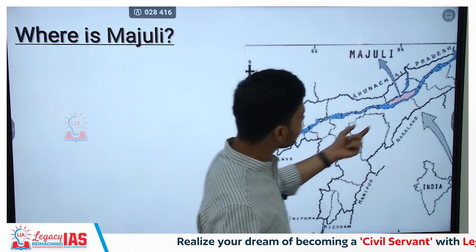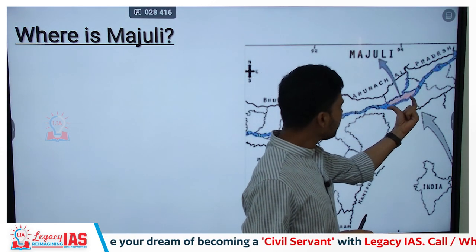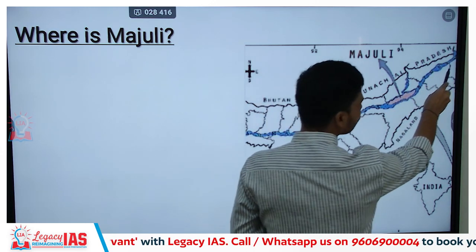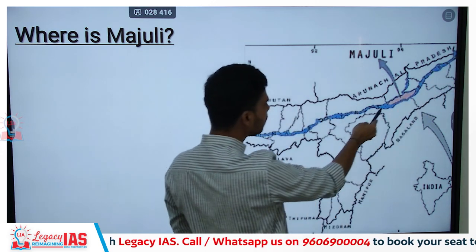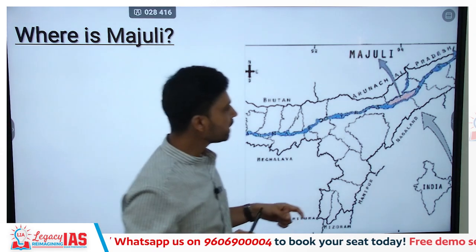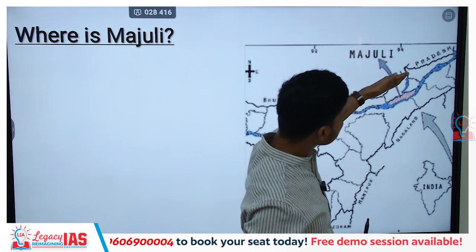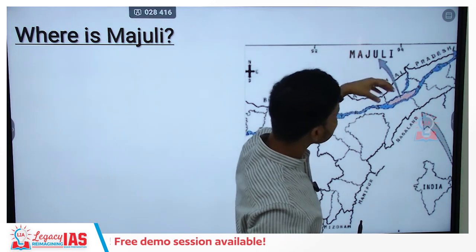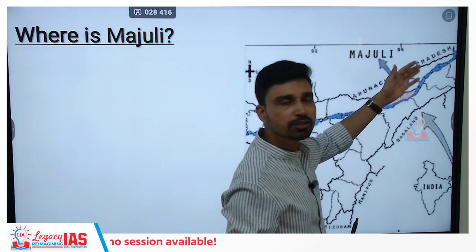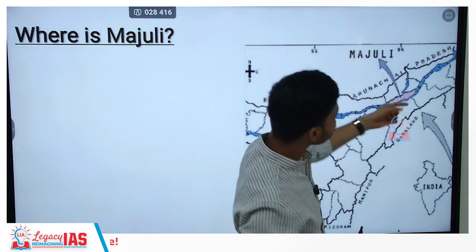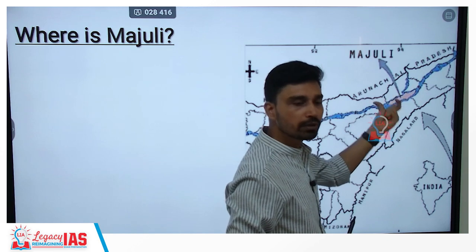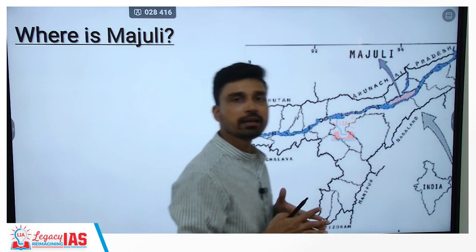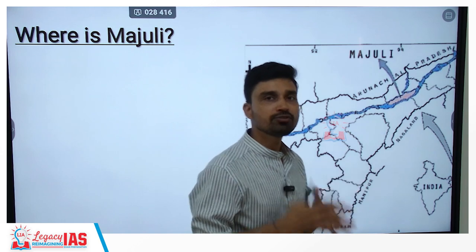Majuli, as discussed, is the largest riverine island. Looking at its geographical location, we have two rivers: the Brahmaputra river and the Suvansiri river, which is a tributary of the Brahmaputra. Sandwiched between these two rivers lies the riverine island of Majuli, which has also been declared as a district of Assam.